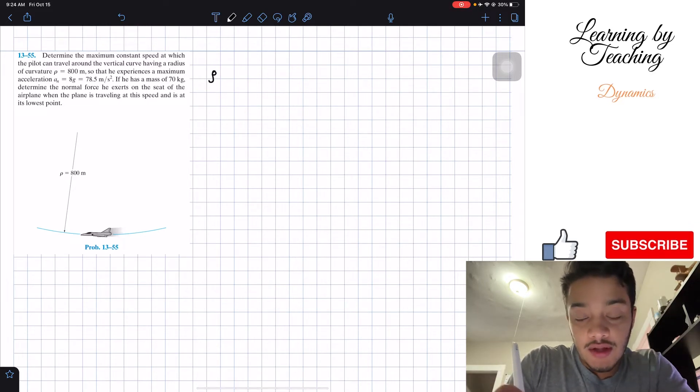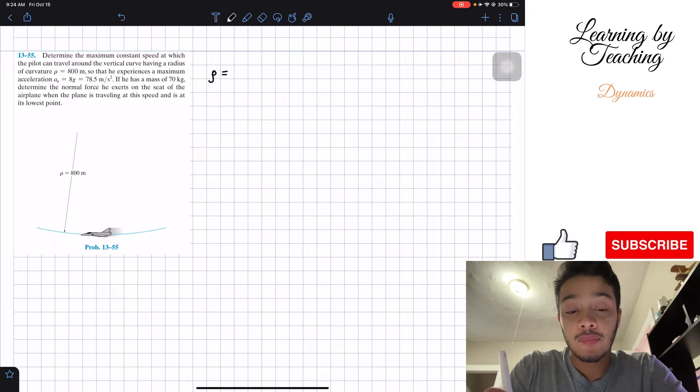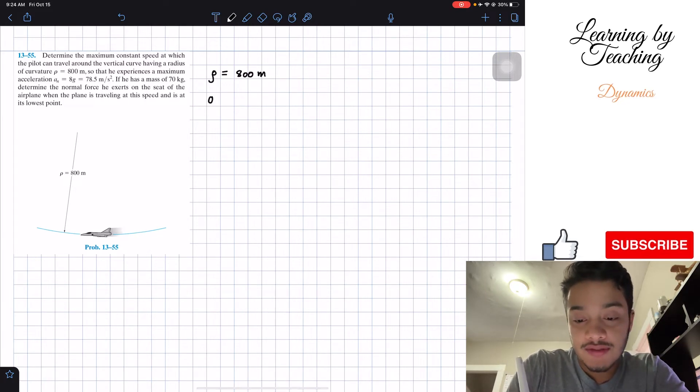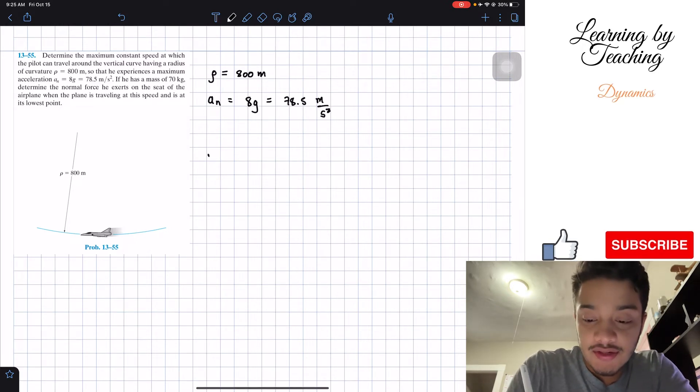The first given that it's telling us in our problem statement is that our radius of curvature is equal to 800 meters. Then, they're also telling us that our normal acceleration is equal to 8g, which is equal to 78.5 meters per second squared. Next, they're telling us that the mass of this pilot is equal to 70 kilograms.